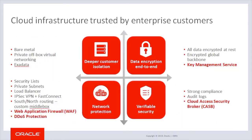Oracle Cloud services make security a top priority. Security is broken down into four areas: number one, deeper customer isolation to prevent customer peering or accidental data sharing; number two, data encryption end-to-end so data cannot be viewed by non-authorized users; number three, network protection to prevent access to applications and data; and number four, verifiable security for full accountability of access to any resource to comply with regulations and for forensic analysis.